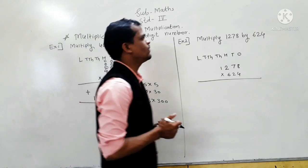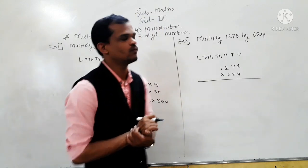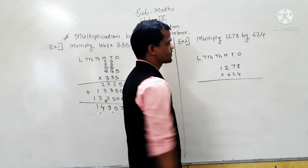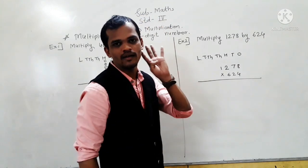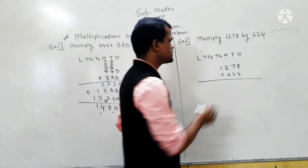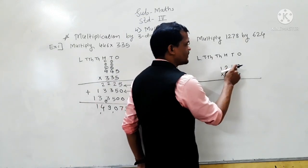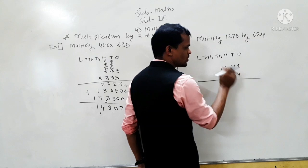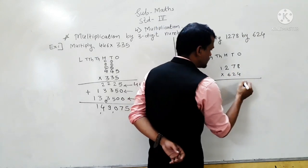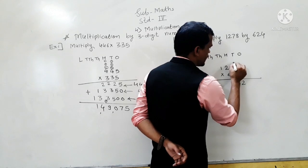Next example: multiply 1278 by 624. First arrange in column. We will solve this example in 4 steps. First multiply 1278 by the ones digit, which is 4. So, 4 eights are 32 — write 2 here and carry 3.